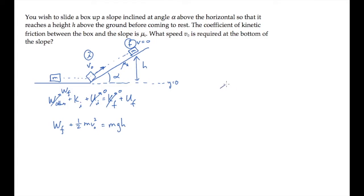Before we can solve for the initial speed v0, we need to evaluate the work done by friction. Let's do that over here and start by redrawing the ramp.